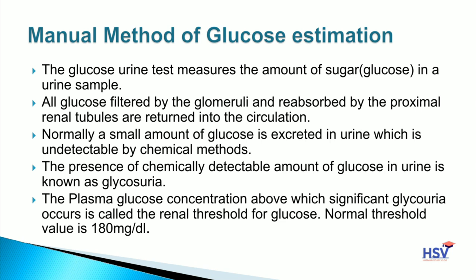The glucose urine test measures the amount of sugar in a urine sample. Glucose urine test measure करता है कि कितनी amount of glucose उस urine sample में present है। All glucose filtered by the glomerulus and reabsorbed by the proximal renal tubules are returned into the circulation. हमारे blood में जितना भी glucose present होता है वो kidney के glomerulus से filter होता है, filter होने के बाद proximal renal tubules उस glucose को reabsorb करके वापस circulation में भेज देता है।